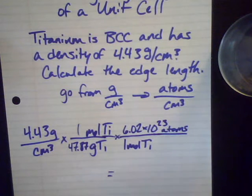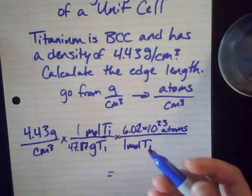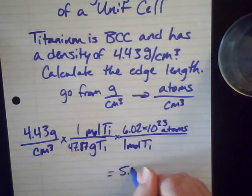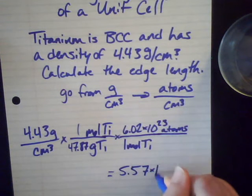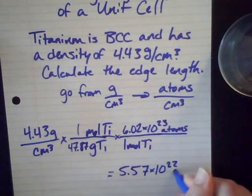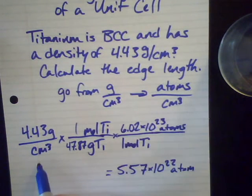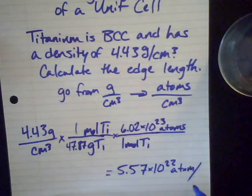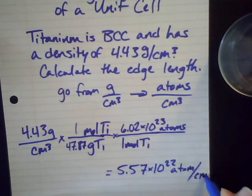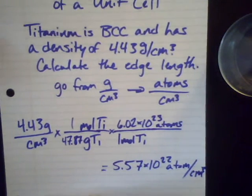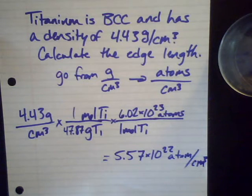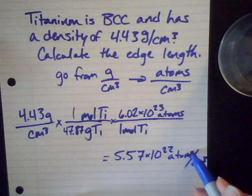And then I can go from moles of titanium to atoms of titanium using Avogadro's number 6.02 times 10 to the 23rd atoms of titanium. So when you plug and chug through that, and I think it's important to understand what you're doing step by step, then you get 5.57 times 10 to the 22nd atoms per cubic centimeter.